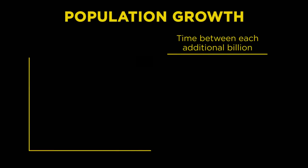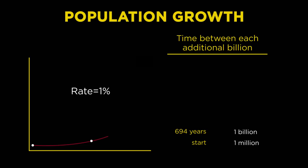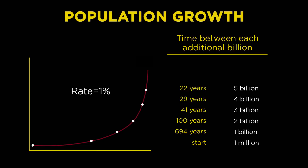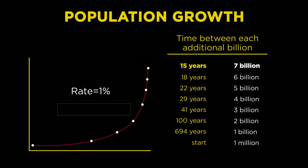To illustrate this using population: if we started with one million people on the planet and set the growth rate at a tiny 1% per year, we'd find that it would take 694 years before we achieved a billion people. But we'd be at 2 billion people after only 100 more years. While the third billion would require just 41 more years, then 29 years, then 22, then 18 years to add another billion, and finally just 15 years for the next billion, bringing us to 7 billion people. Each additional billion people took a shorter and shorter amount of time to achieve. Here we can clearly see the theme of speeding up.